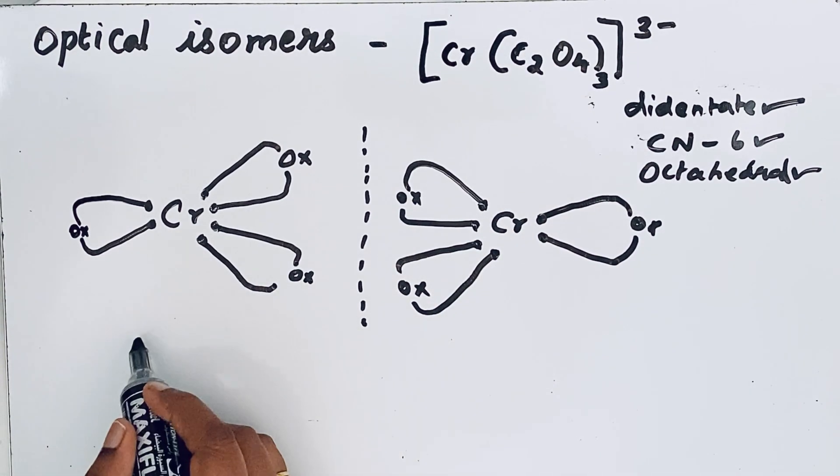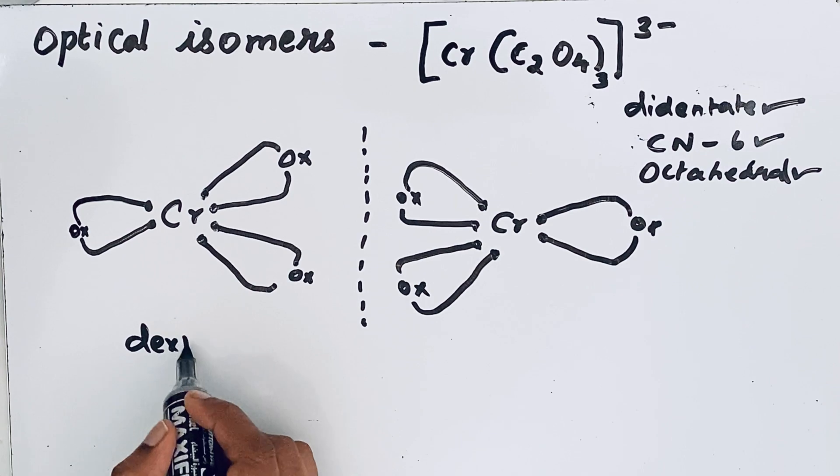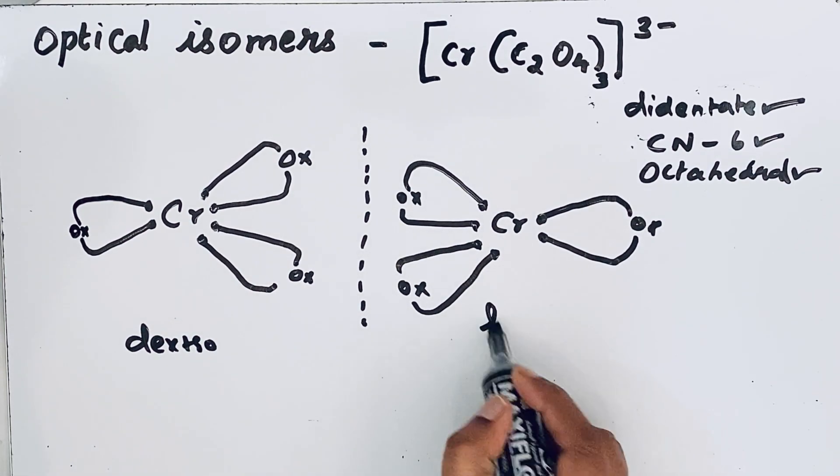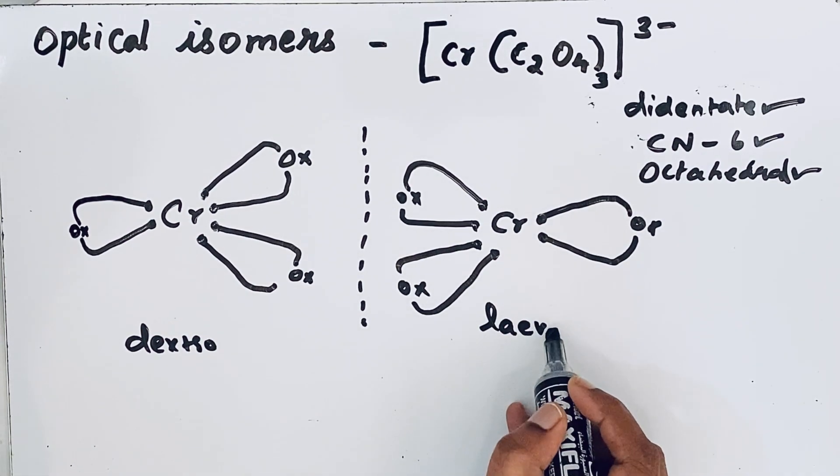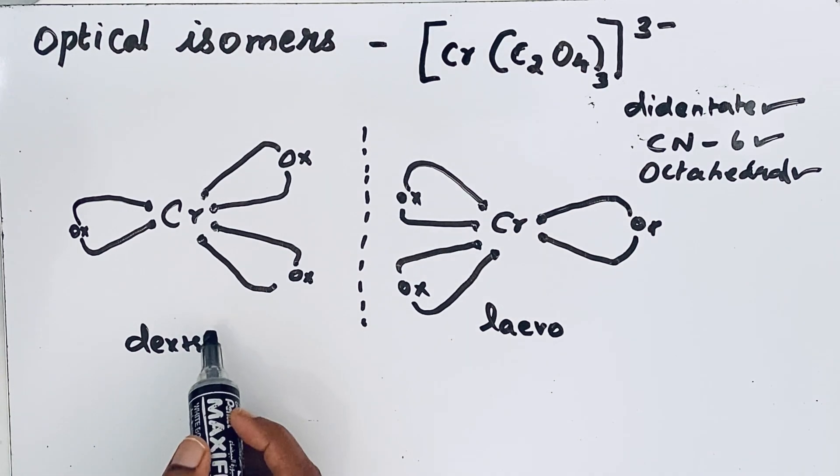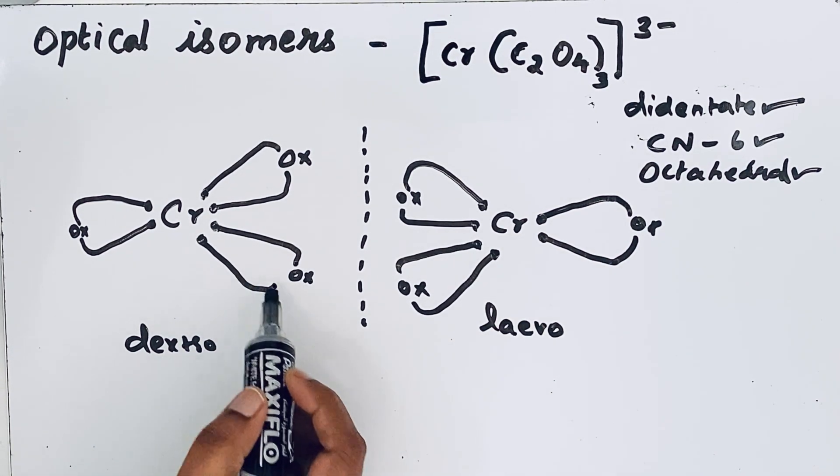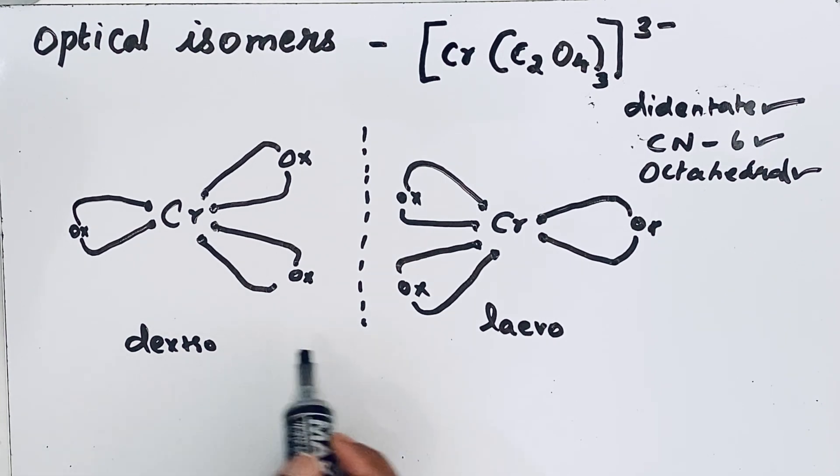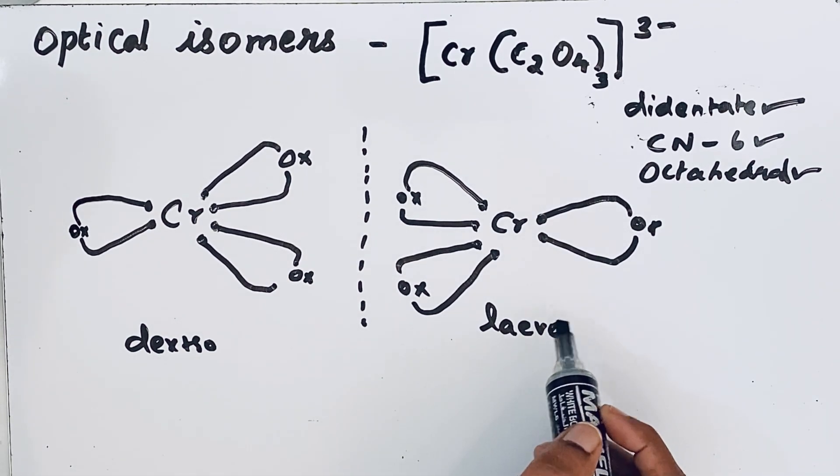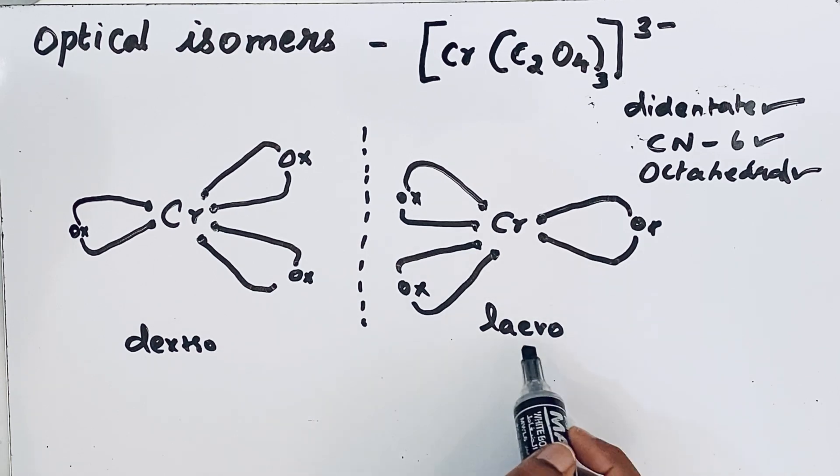So this one we call dextro, and this one we call levorotatory. Because this one rotates plane polarized light in the right direction, it is called dextrorotatory. And this compound rotates plane polarized light to the left. L means left side, so it is called levorotatory.